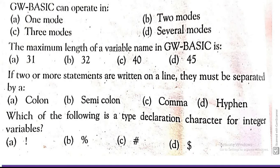The next MCQ is: The maximum length of a variable name in GW-BASIC is: Option A 31, Option B 32, Option C 40, and Option D 45. The correct answer is Option C 40. The variable length must not be more than 40 characters.